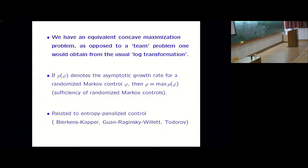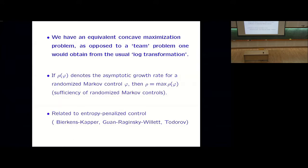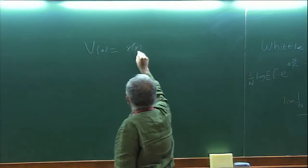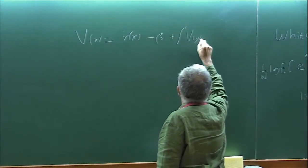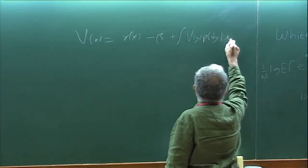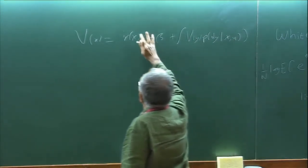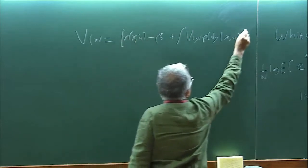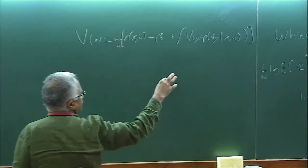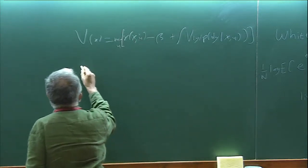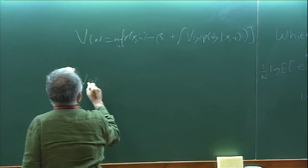What you get is a multiplicative dynamic programming equation. For that long run average problem which I mentioned here, let me just write down the dynamic programming equation which will be something like this. Let me just assume they depend only on x for simplicity. This is classical, as I said, for the discrete finite state case, it goes back to Howard.